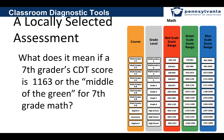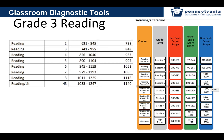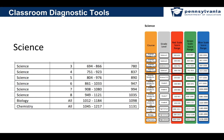In the Future Ready PA Index, there is the opportunity to use on-track measures tied to a state assessment or a locally selected assessment, and you could use CDT data for that locally selected assessment. Seventh grade math is one of those areas — seventh grade students would need to reach 1163 or higher to be considered on track for seventh grade math expectations. We also have middle of the green calculations for reading, since grade 3 reading is another on-track measure on the Future Ready PA Index, and there is a chart for science as well, though it is not an on-track measure.